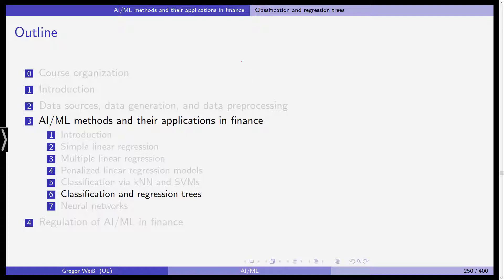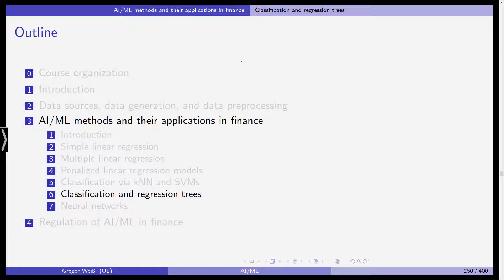This is a section on regression trees. What are trees? Just like support vector machines and k-nearest neighbors, these models can actually be used for classification but also for regression problems. It's simply a matter of changing the response variable from a binary variable to a metric one.